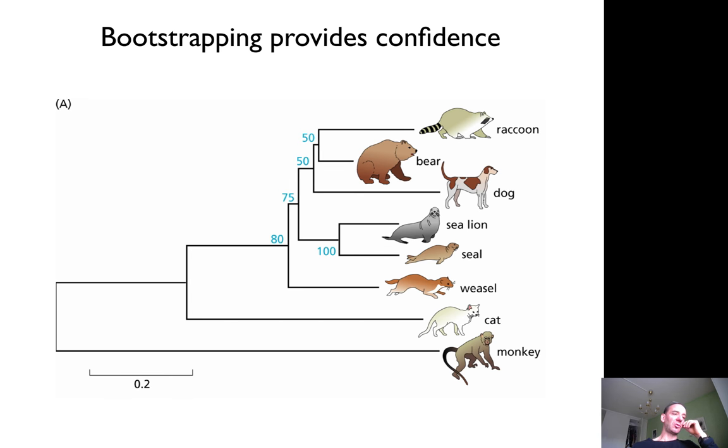So we can deduce that sea lions and seals are more similar to each other than to others. But the exact relationship between bears, raccoons, and dogs is, from this dataset, less well defined.